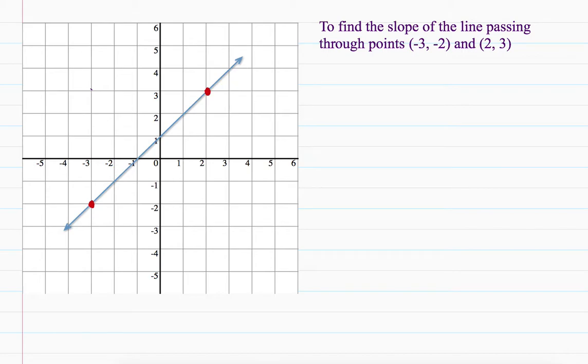All right, so in this video we are going to find the slope of a line. Now first things first, if you're looking at this line, you can see that moving from left to right, the line is going up. So our slope is going to be positive.